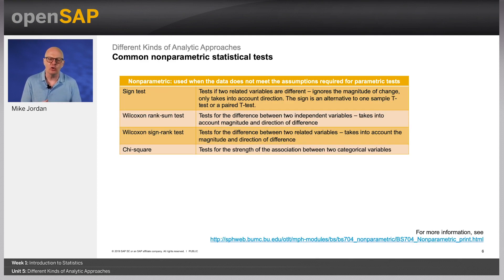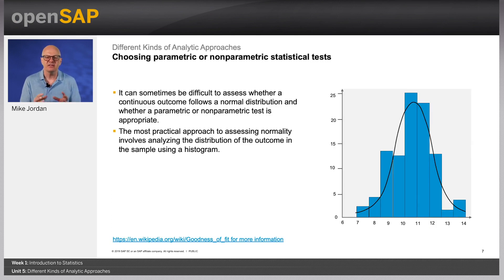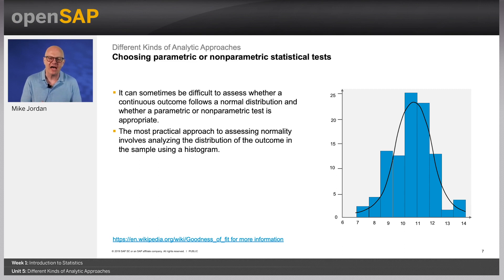When the sample size is small and the distribution of the outcome is not known and cannot be assumed to be approximately normally distributed, then alternative tests called non-parametric tests are appropriate. It can sometimes be difficult to assess whether a continuous outcome follows a normal distribution, and whether a parametric or a non-parametric test is the appropriate one. The most practical approach to assessing normality involves analysing the distribution of the outcome in the sample using a histogram.